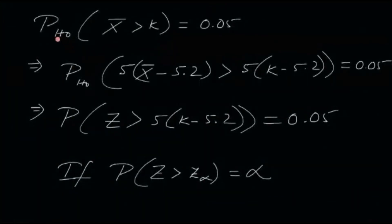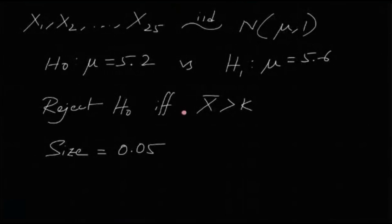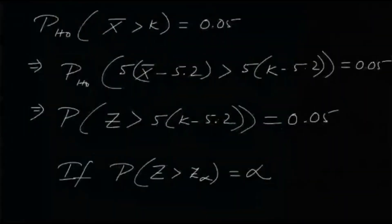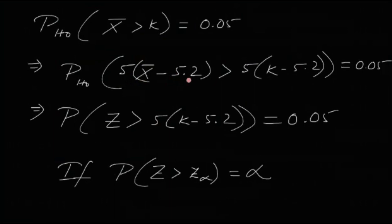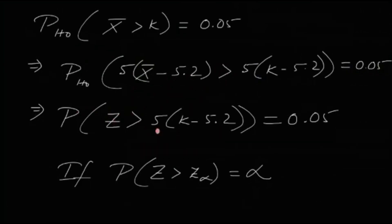The probability under H0 of rejecting H0 is P(x-bar > k) = 0.05. Subtracting 5.2 from both sides and multiplying by 5, we get P(5(x-bar − 5.2) > 5(k − 5.2)) = 0.05. Since 5(x-bar − 5.2) is standard normal, letting it be Z, we have P(Z > 5(k − 5.2)) = 0.05.